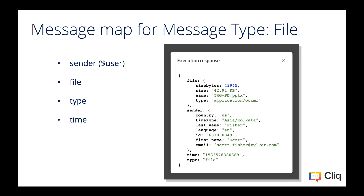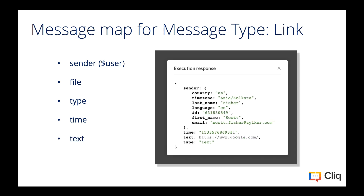For messages of the type attachments, apart from the usual sender info and the message information, the message map will also have a file object which will contain details about the file size, file type, and file name. For messages of the type URL or link, there isn't much of a difference between a message action performed on a URL or a text message. The message map will contain all the same attributes, and the URL will be available to the user as a value for the key 'text'.